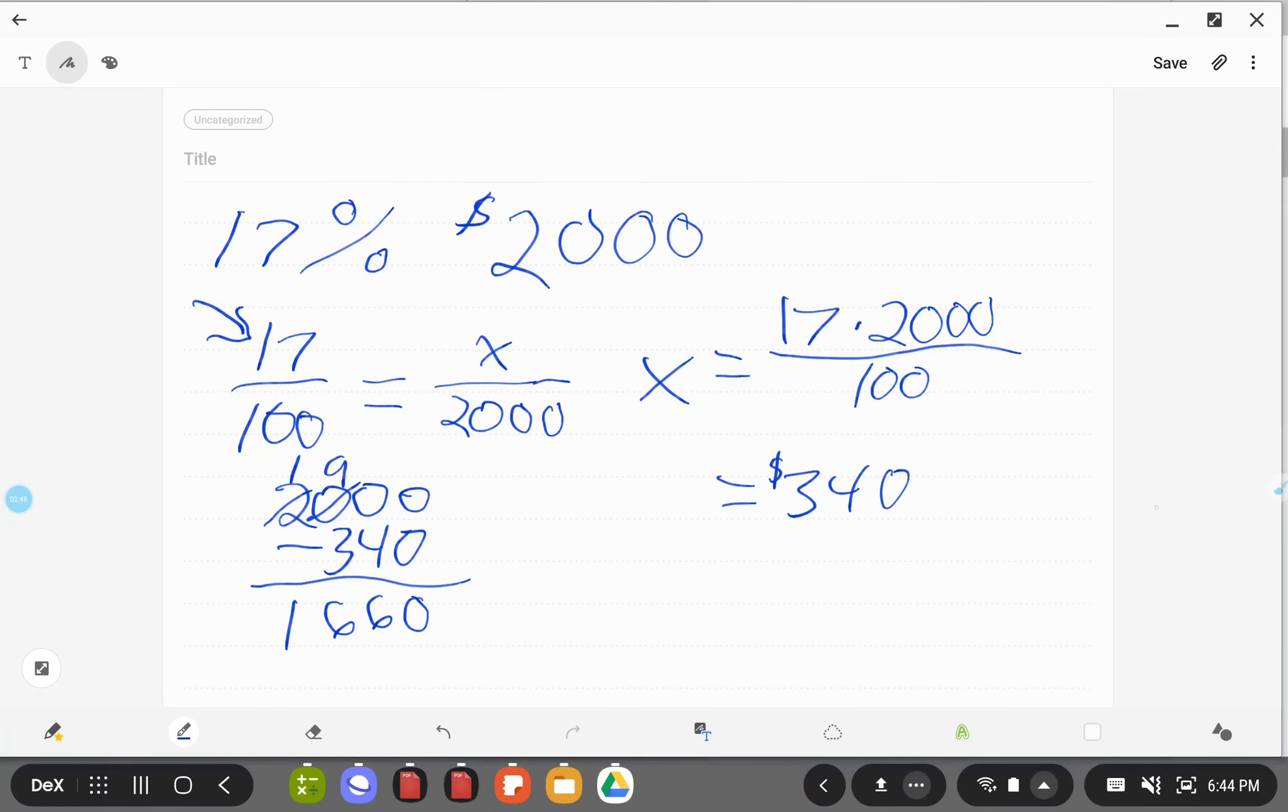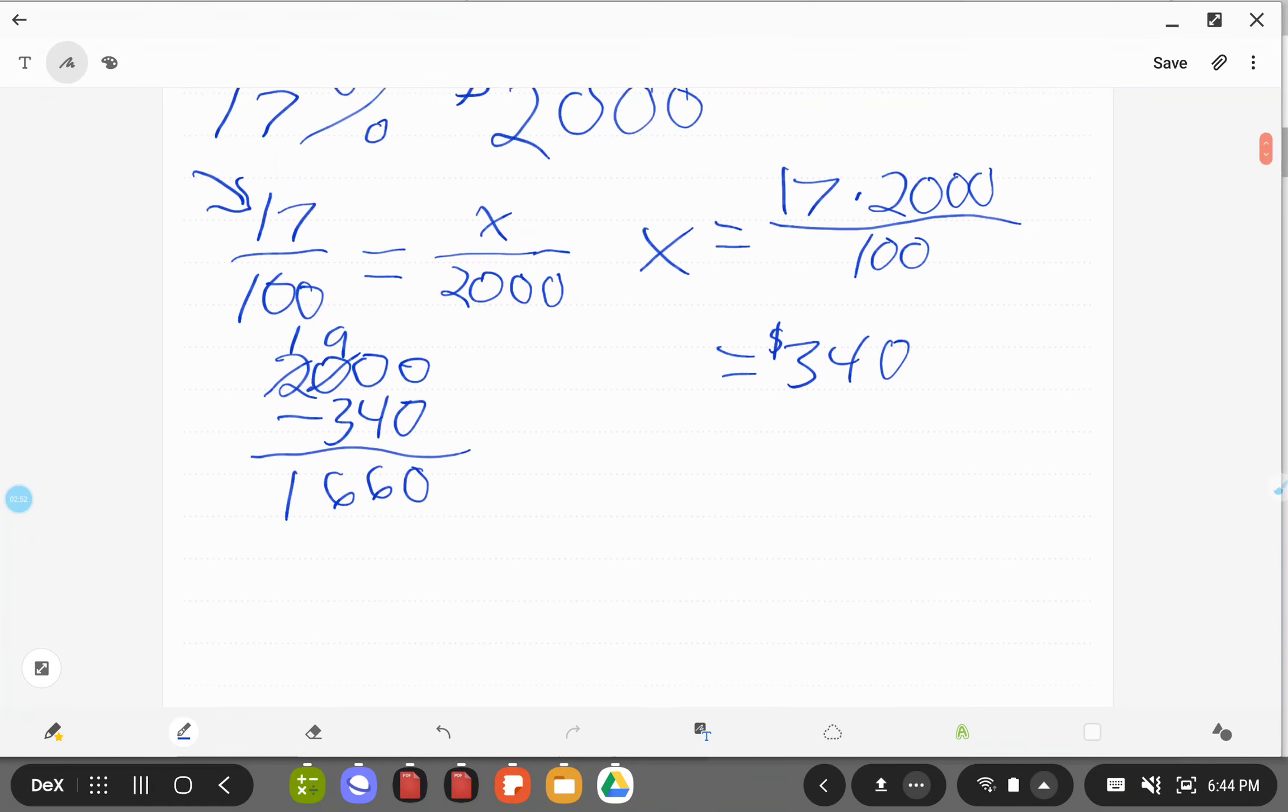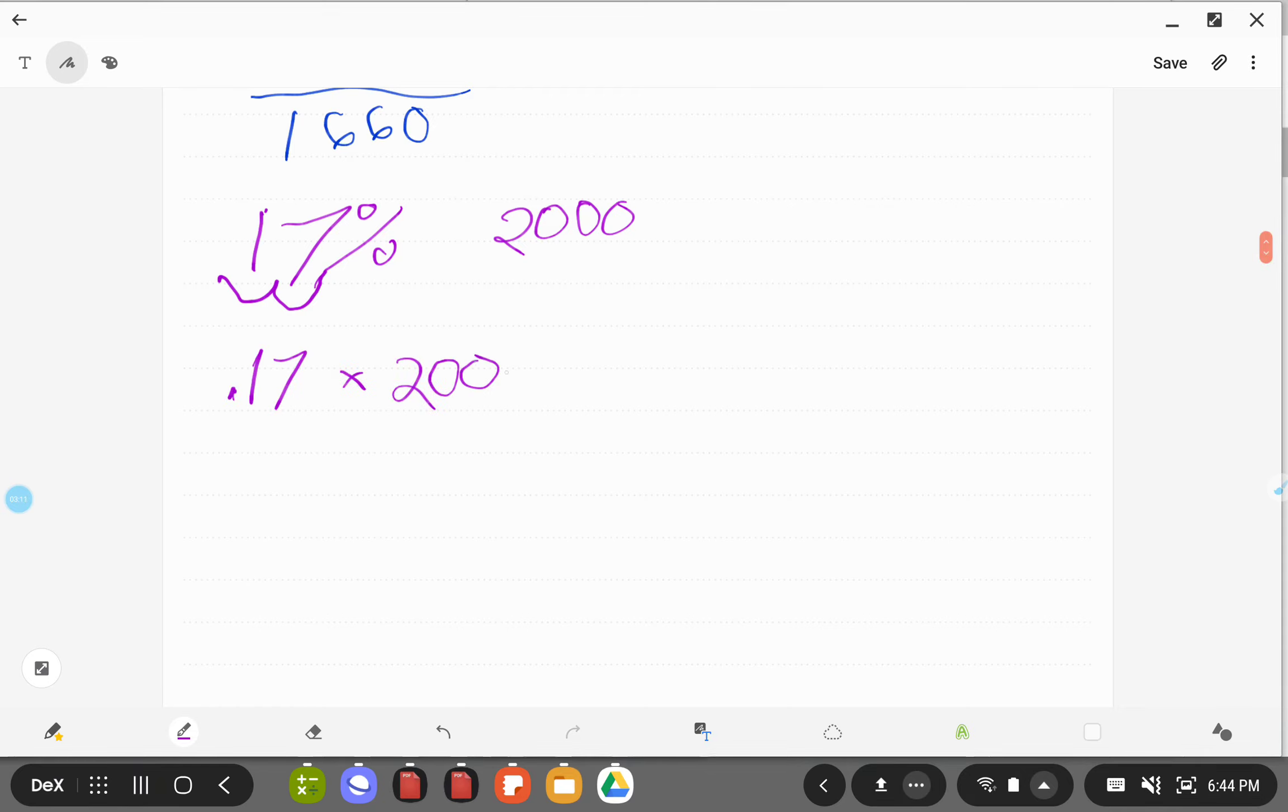All right, so that's how you do it with proportions. You could also do it with our equation. So 17% of 2000. We have to turn the 17 into a decimal, which means we're moving that decimal point two places. It becomes 0.17. So 0.17 times 2000, because we're doing our percent as a decimal times the whole equals the part equation.